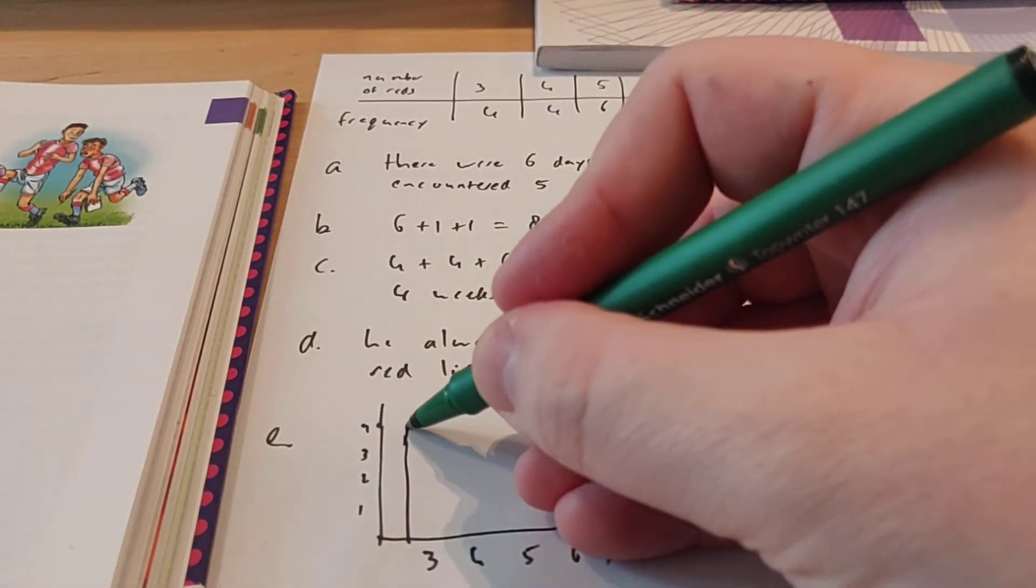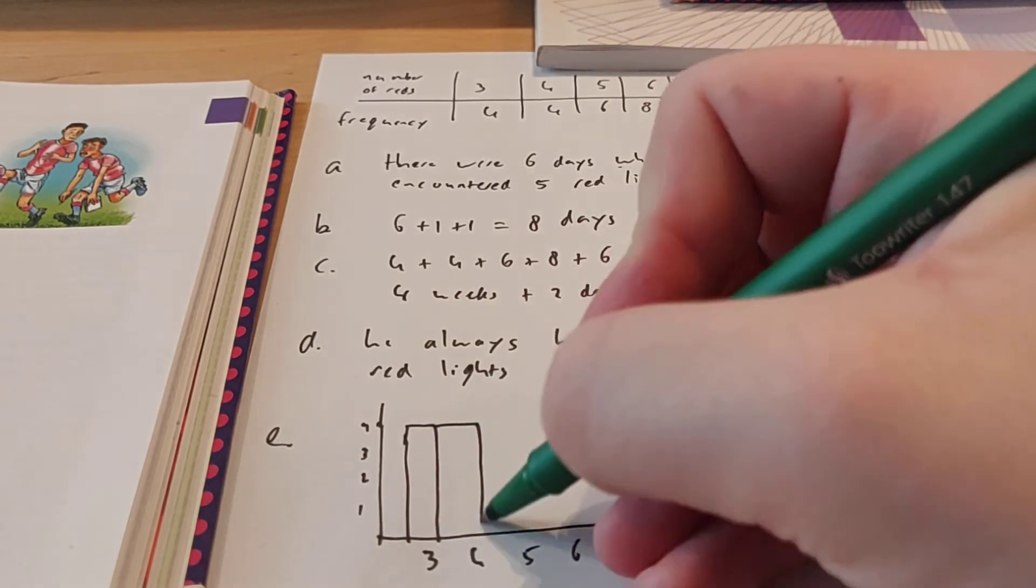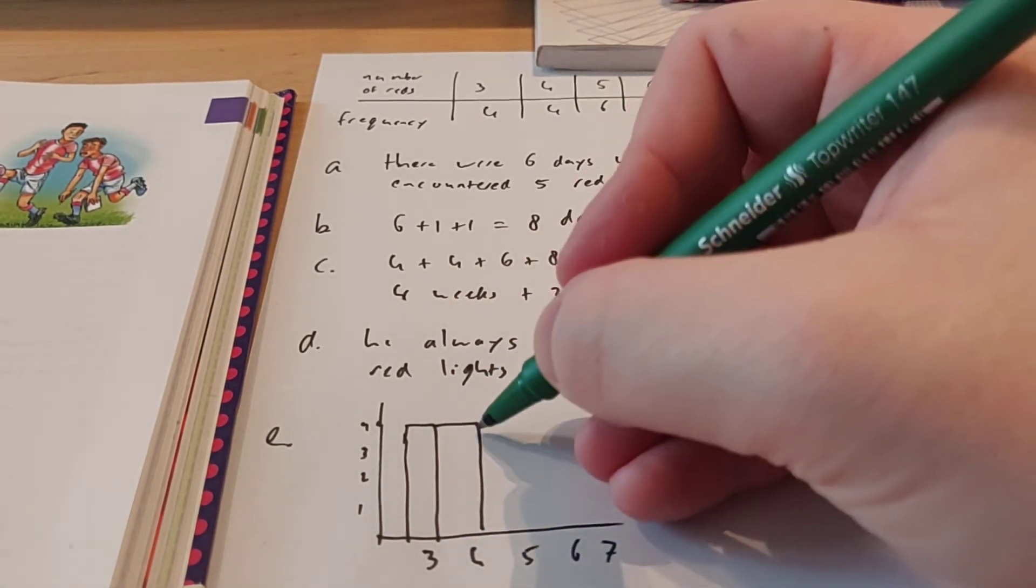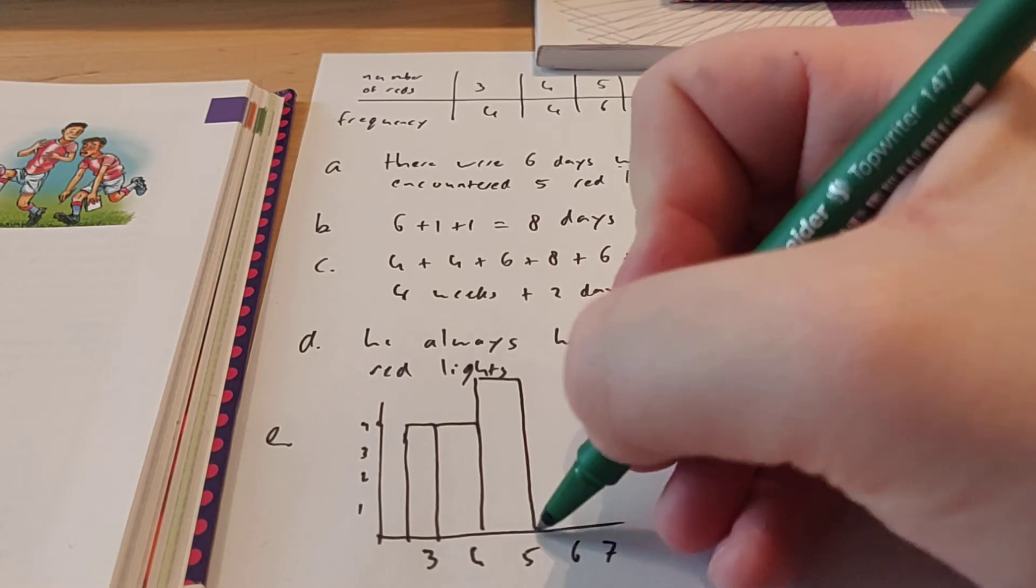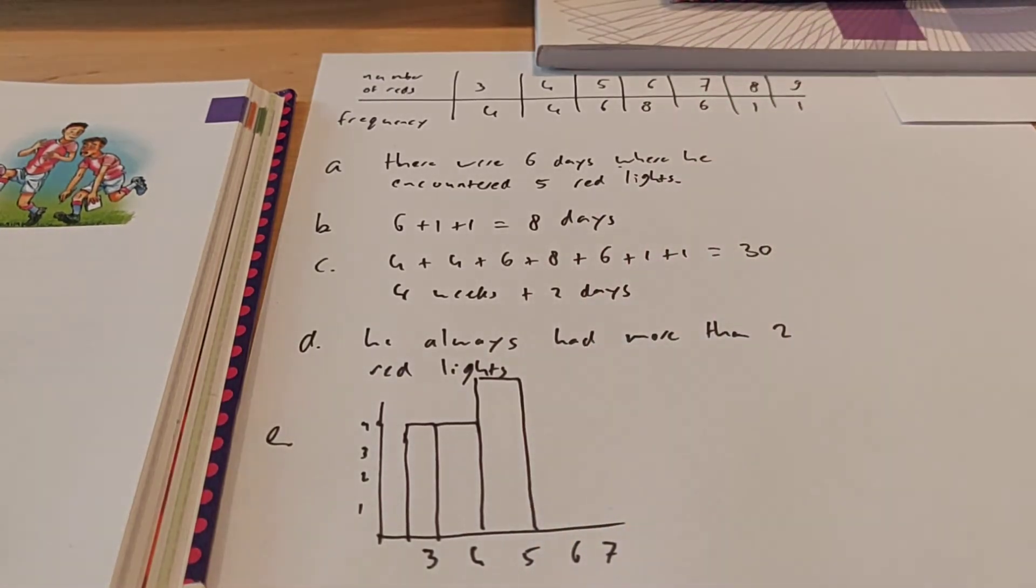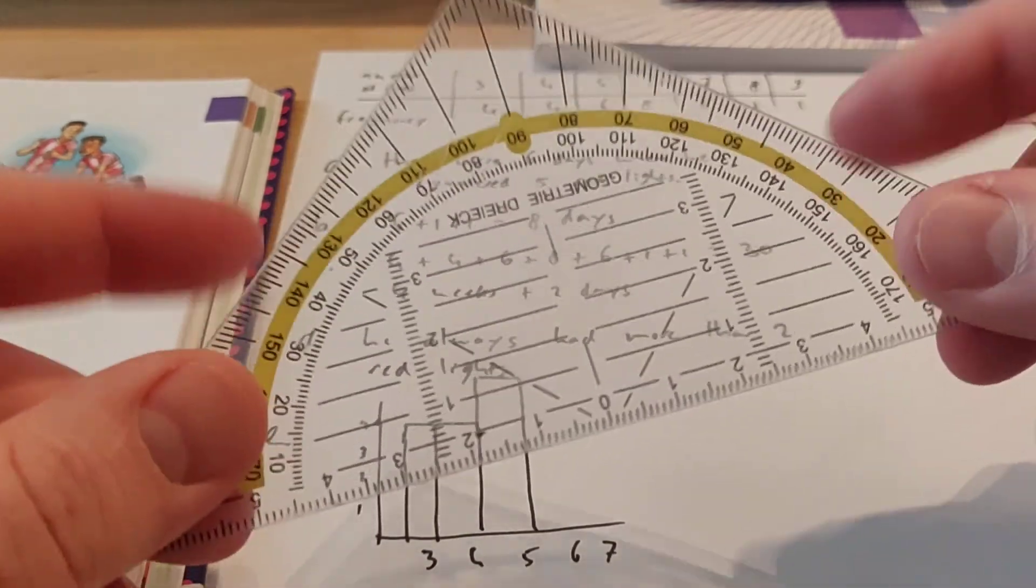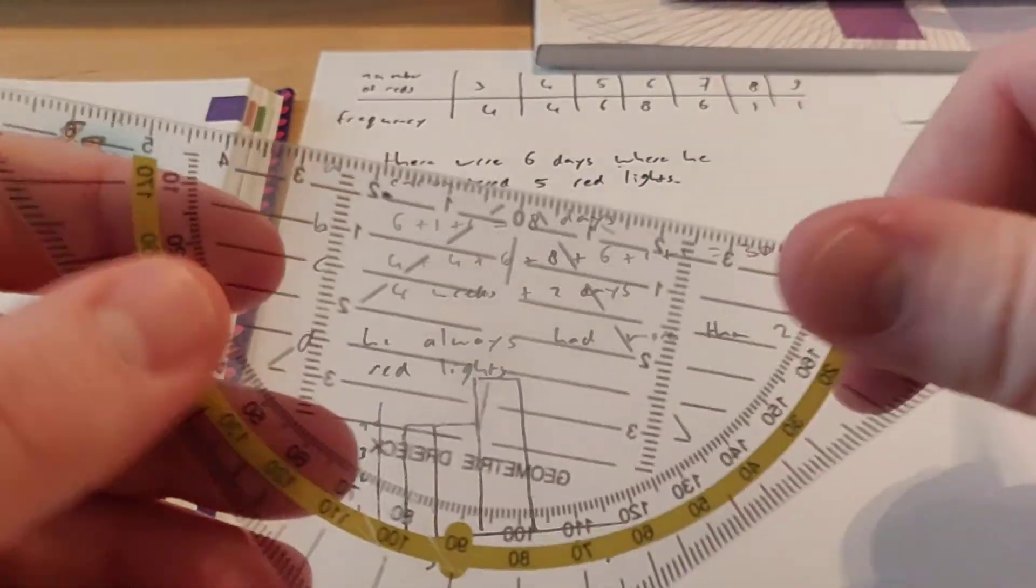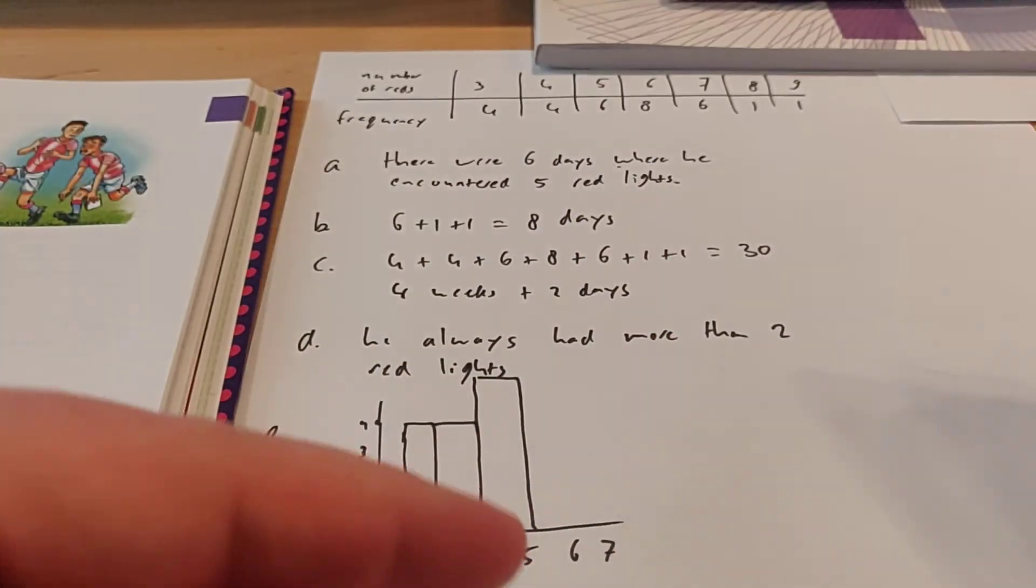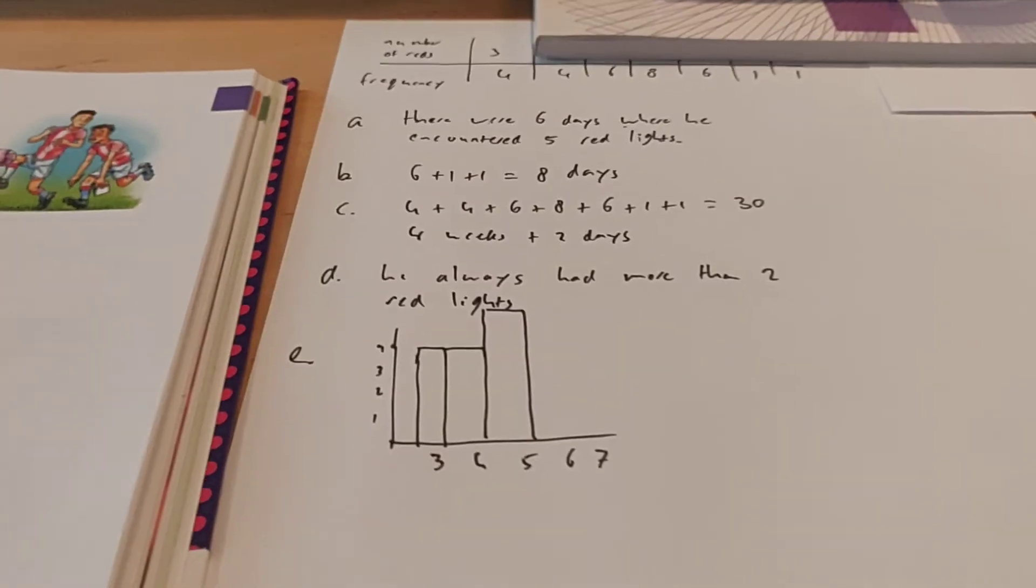And then for 3, for example, it was 4 high, right? And for 4, it was also 4 high. And for 5, it was 6 high. So that will look like that. And then you just keep making it. But be sure to use a pencil and a geometrical triangle to draw nice straight lines, right? I mean, you have 40 minutes to make this thing, so you might as well make it properly.